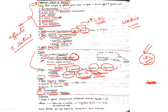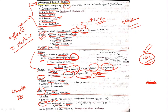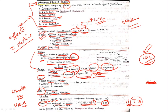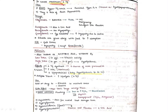Fibrates are PPAR-alpha agonists. Fibrates stimulate PPAR-alpha receptors present in the nucleus of endothelial cells. By stimulating this receptor, fibrates increase the synthesis of lipoprotein lipase. Increased lipoprotein lipase decreases the amount of triglycerides. So fibrates are used for decreasing triglyceride levels and cause maximum decrement in triglycerides.